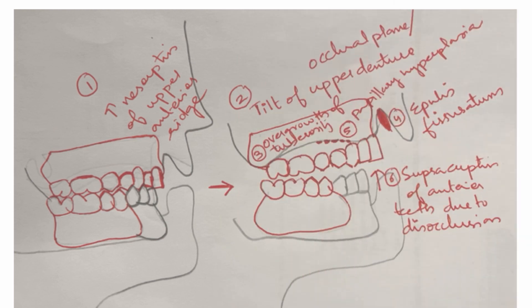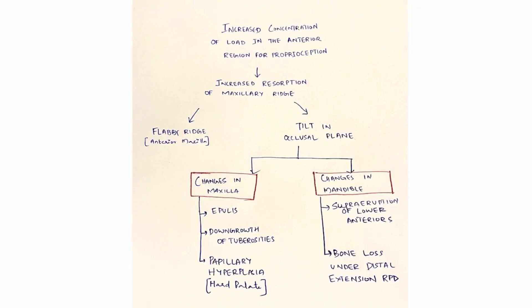These are the features in the maxilla. In the mandible, there will be supra-eruption of the lower anterior teeth due to proprioception, as they are the only natural teeth remaining. This supra-eruption leads to loss of periodontal support, along with extensive bone loss under the distal extension RPD. This creates a cycle: more supra-eruption of lower anteriors leads to more anterior resorption in the maxilla, and the cycle continues.